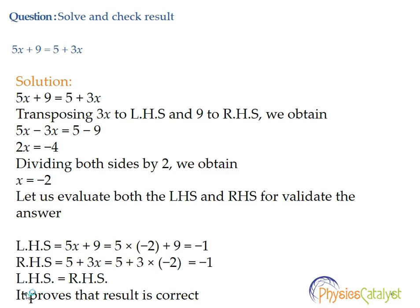Let's bring the constant terms to one side and the variable terms to one side. Transposing 3x to the left-hand side and 9 to the right-hand side, we obtain 5x − 3x = 5 − 9, which gives 2x = −4. Dividing both sides by 2, we get x = −2. So x = −2 is the solution of this equation.